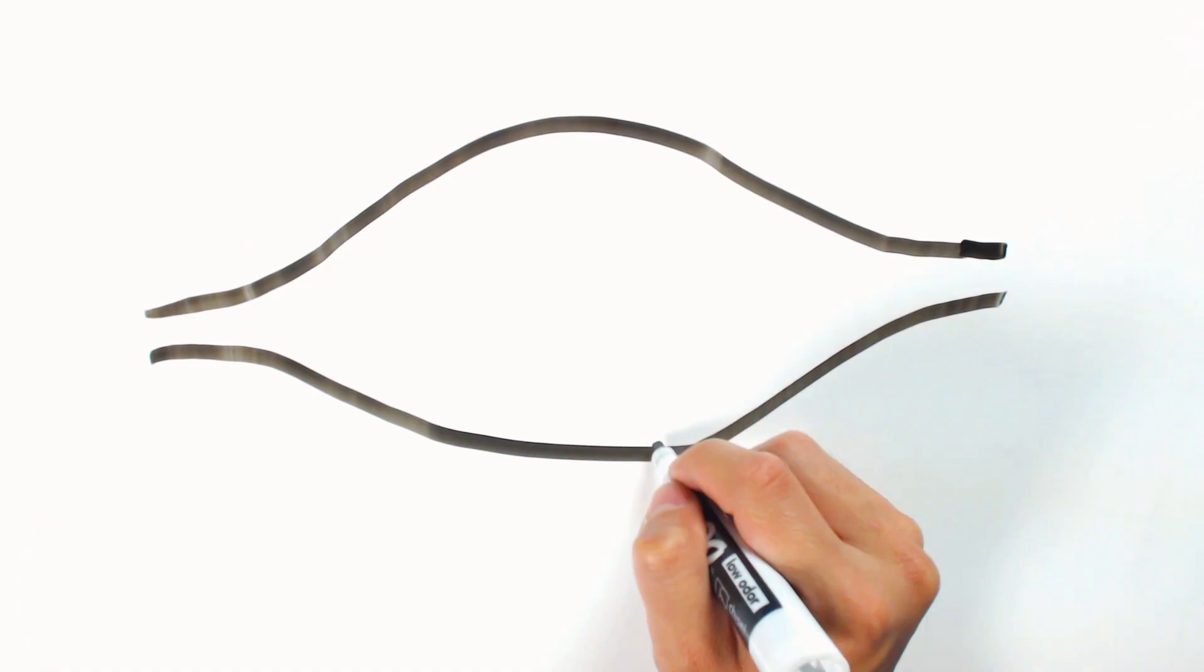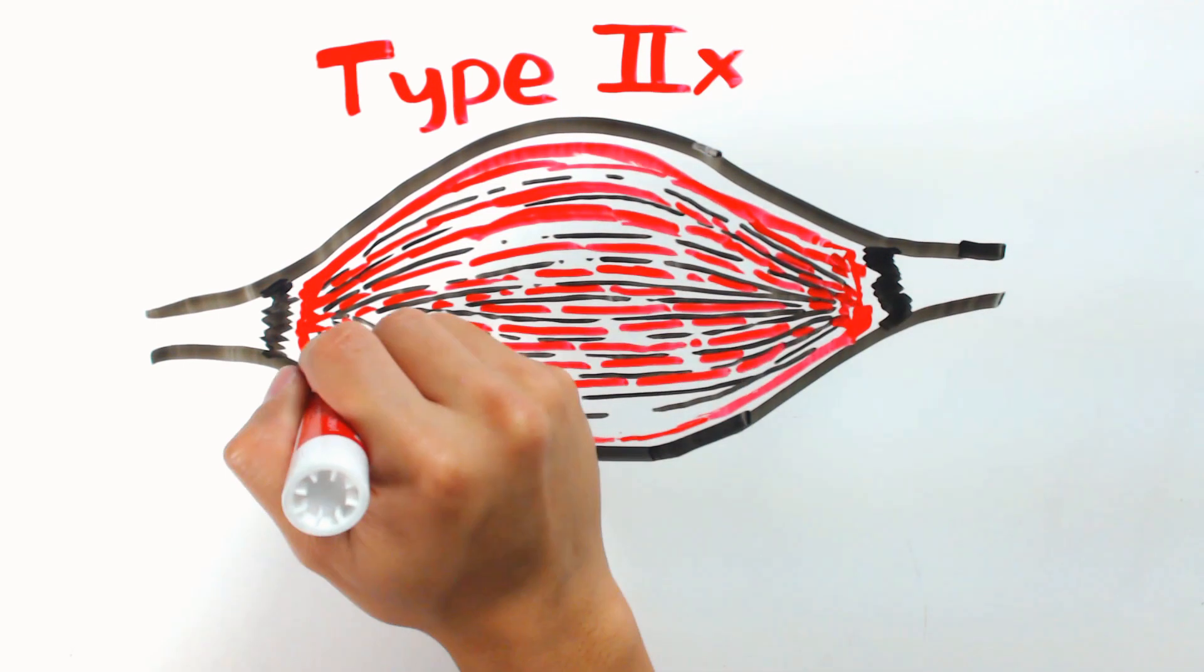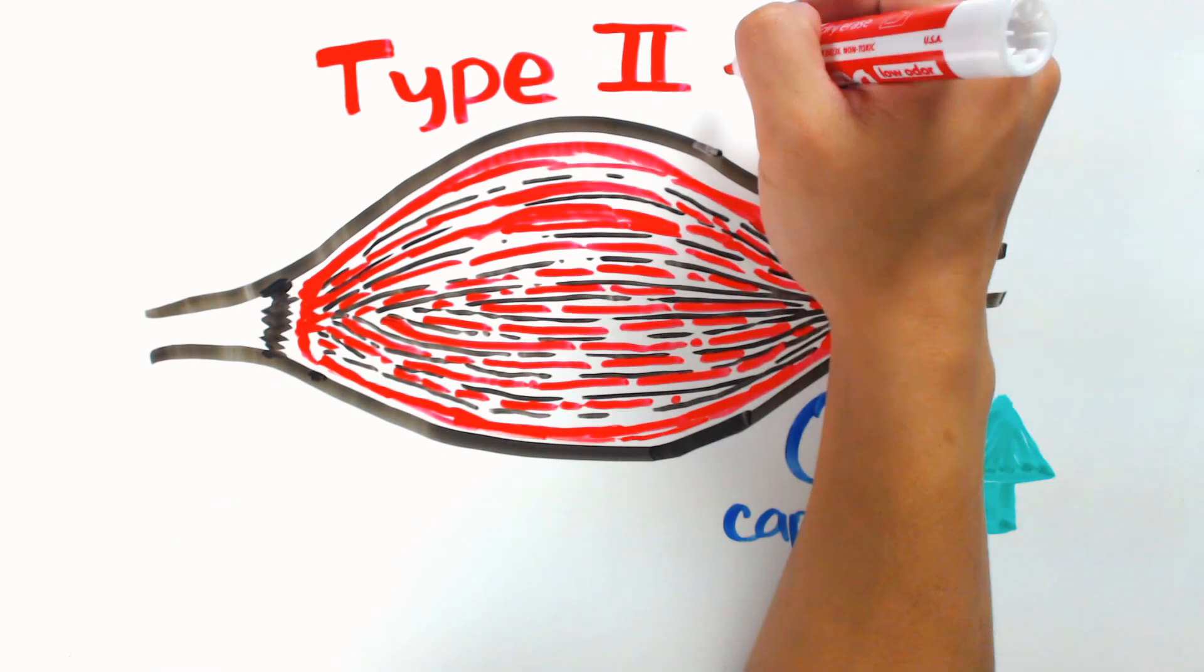There have been some findings that suggest that Type 2x fibers can change into Type 2a fibers with proper training. However, this might simply be due to Type 2x fibers showing higher oxygen capacity through physical adaptation. They are, ultimately, still Type 2x fibers.